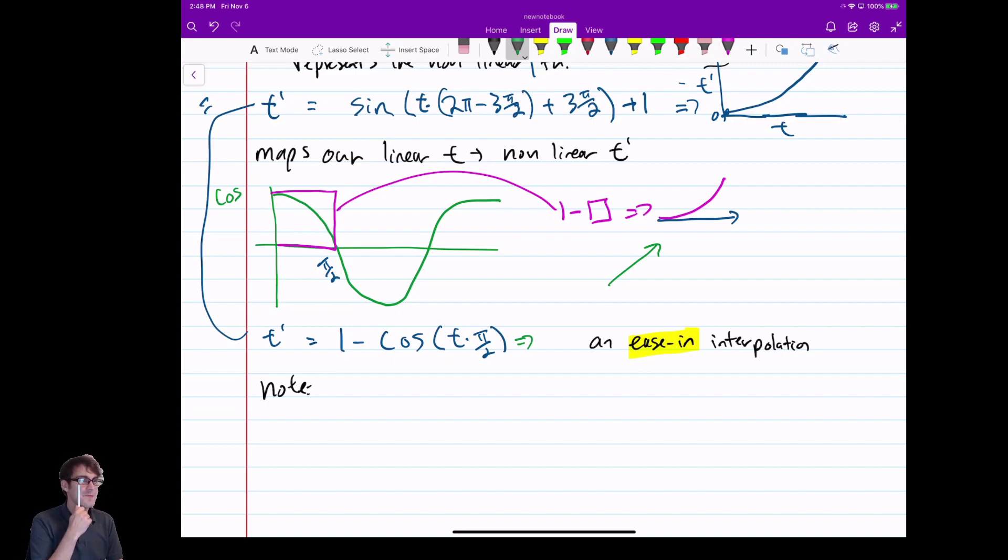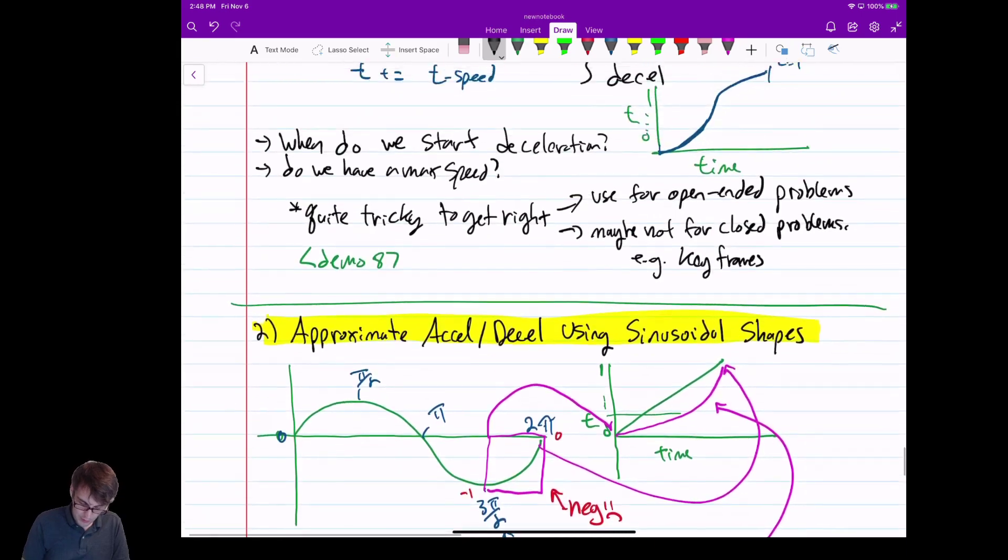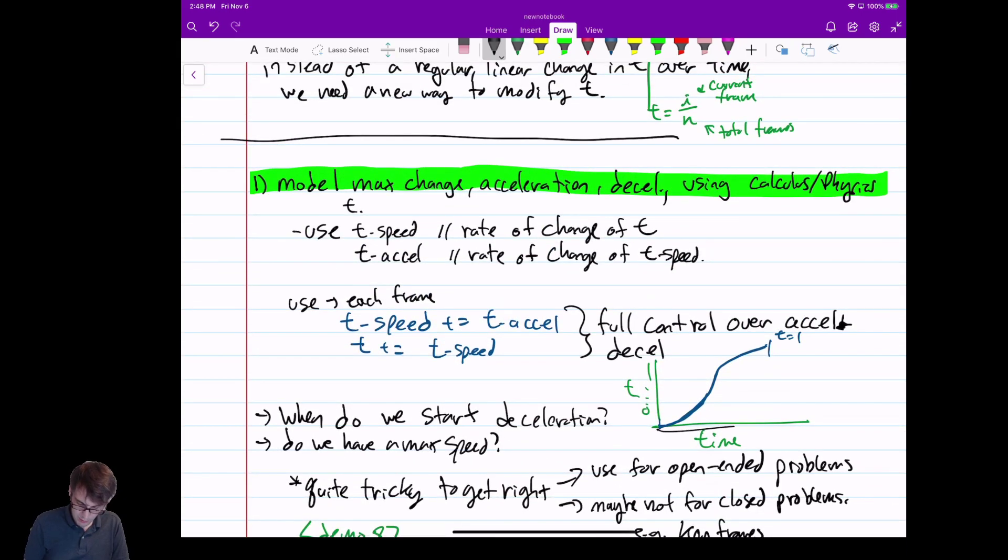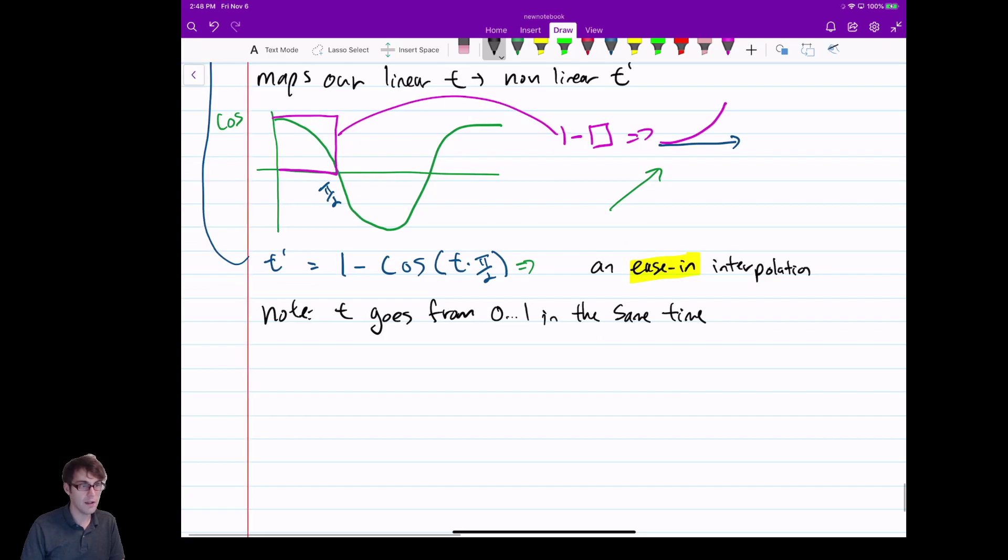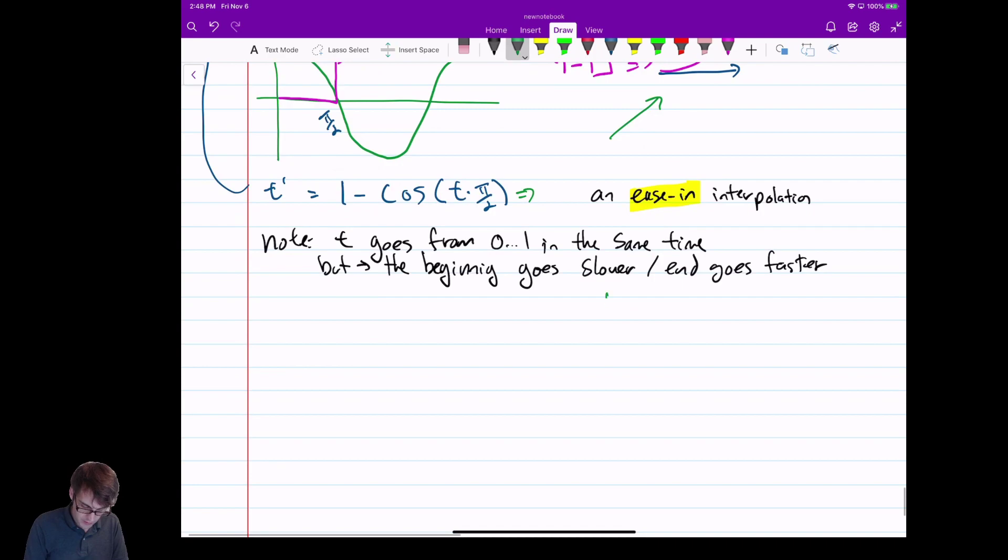Note, when you look at this function I'm making here, we should just realize, what's going on here? It takes a t from 0 to 1. So it takes a t from 0 to 1 in the same time as it did before. So if I go up to my earlier functions, we still take t from 0 to 1 over the same time. So if it's 10 seconds before, if it's 10 seconds before, it's still 10 seconds now. But the beginning goes slower. The end goes faster.